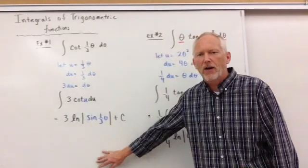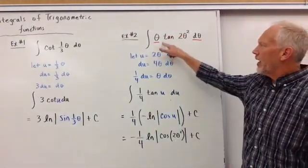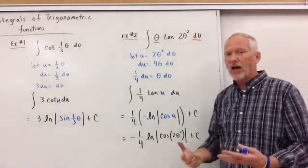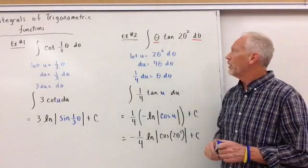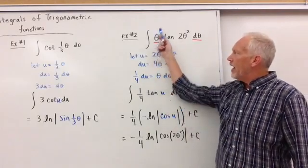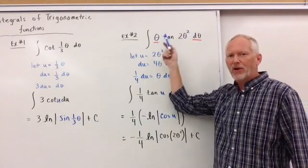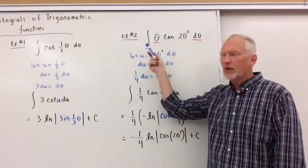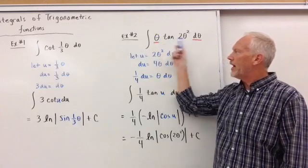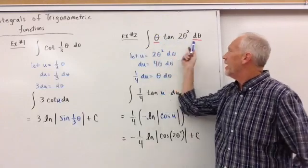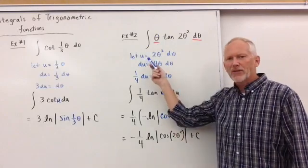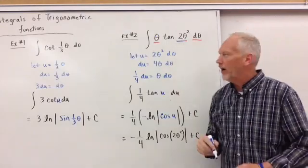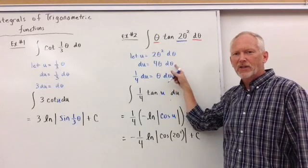Alright, example number two. Check it out. Alright, we have theta times the tangent of two-theta squared d-theta. A lot going on here, it seems like, in this problem. However, what we want to do is we want to isolate. How do we get rid of theta? Anytime we're outside the argument, we want to try and get rid of that. So we say, if I took a U and I took the derivative of the U, could I eliminate or simplify this theta and d-theta? So let's see what happens. If we let U equal this inside piece of two-theta squared, then we would get four-theta d-theta.